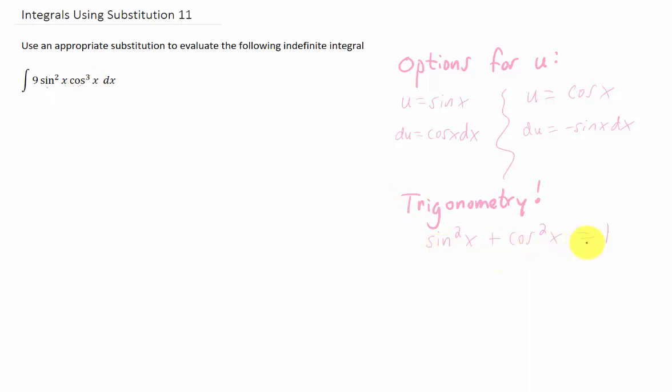Specifically, that we might be using this Pythagorean identity here, this fundamental trig identity, which takes on two forms. You can write sine squared as 1 minus cosine squared, or cosine squared as 1 minus sine squared. Now, back at the beginning when we were considering this u equals sine of x option, we said we would have a u squared right here, but we have a cosine cubed x instead of just a cosine of x dx here. Well, one option is to do a little bit of rewriting of this integral.